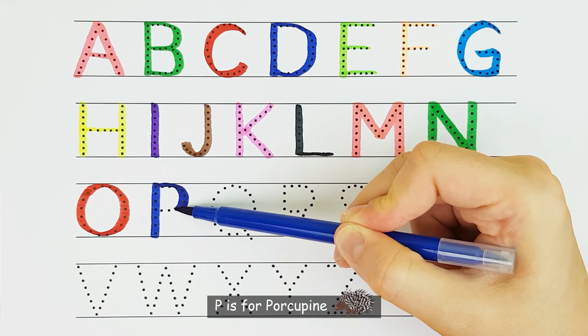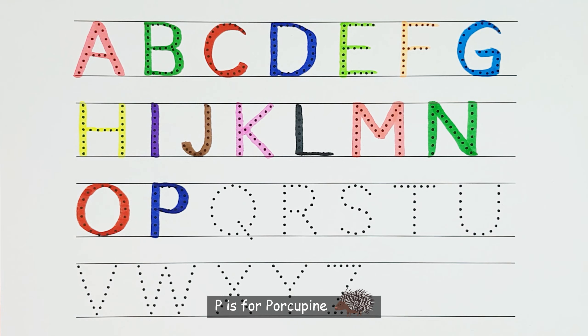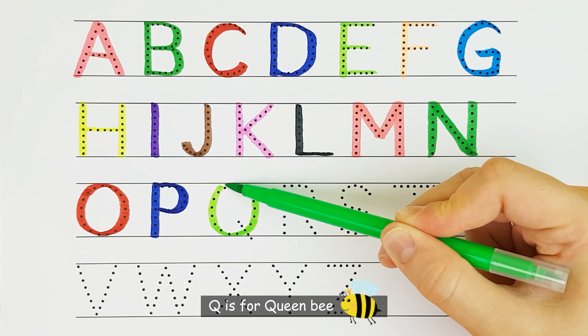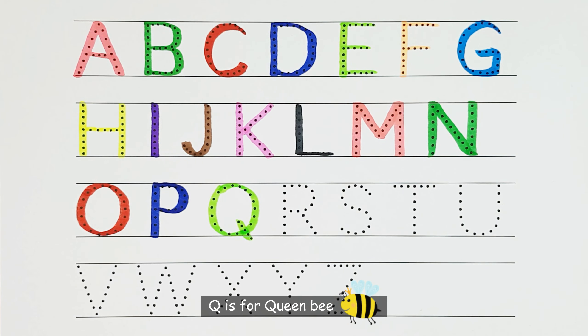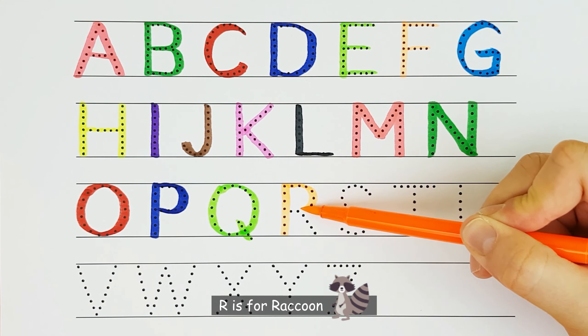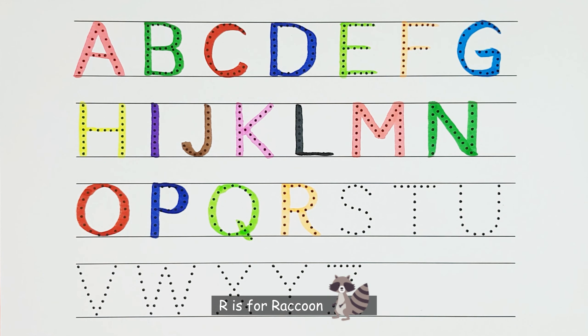P. P is for porcupine. P. Q. Q is for queen bee. Q. R. R is for raccoon. R.